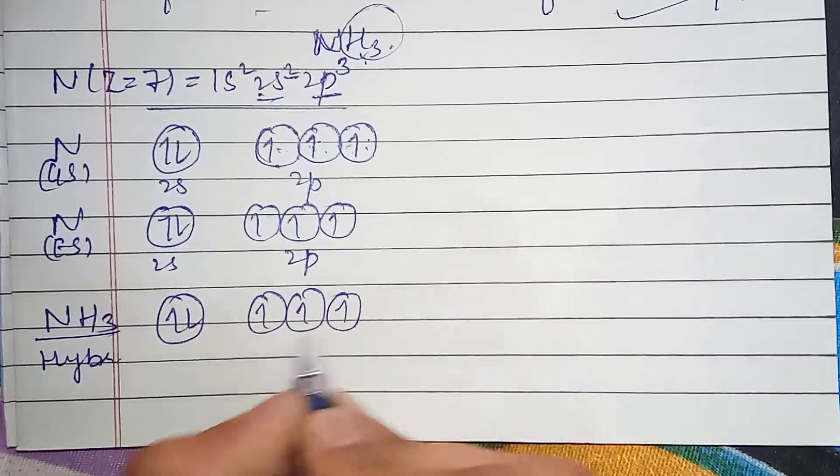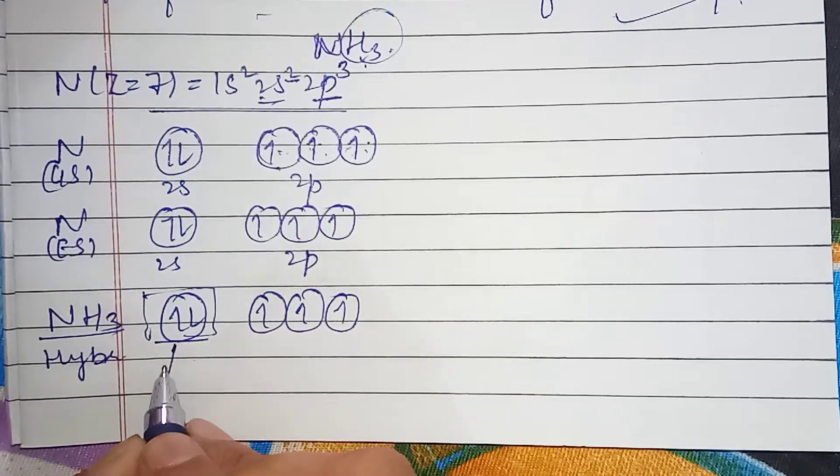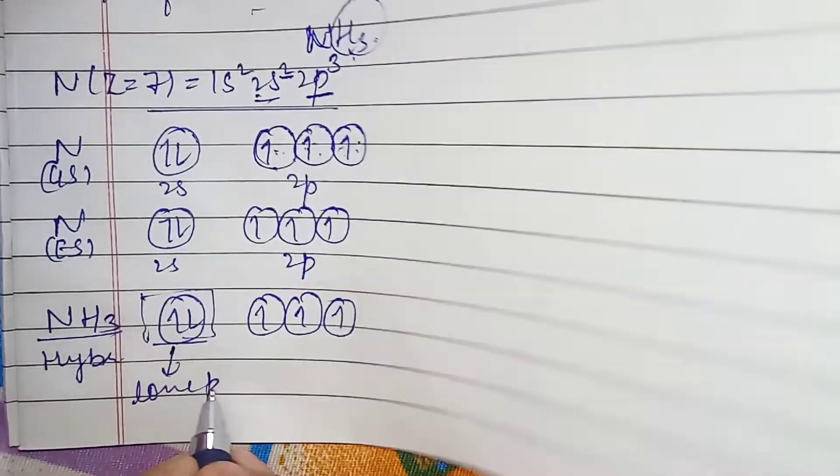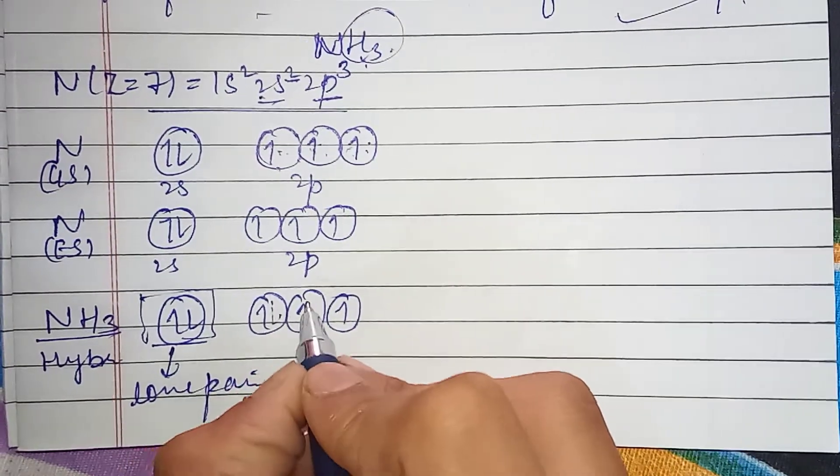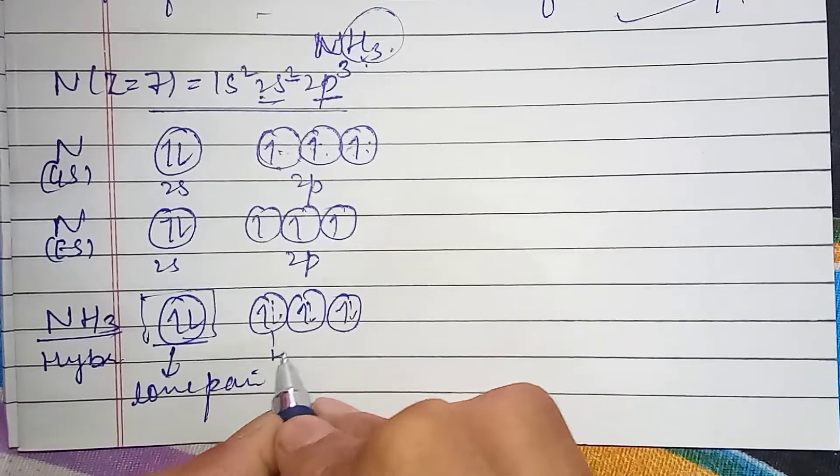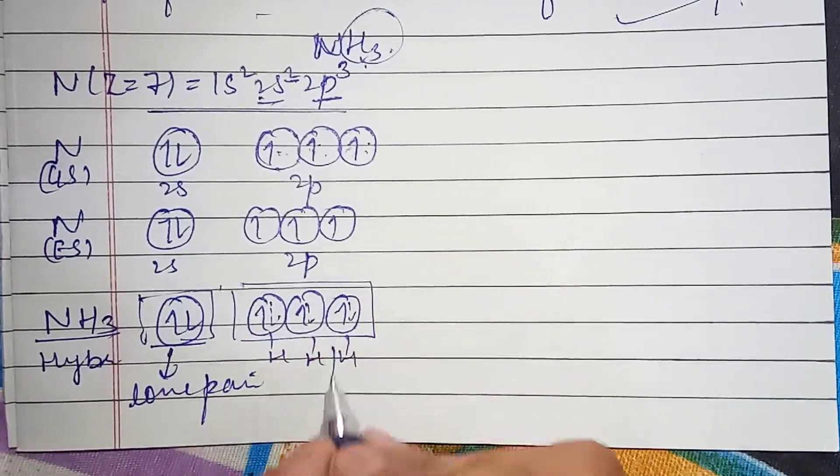As it is, which is completely filled, these are our lone pair electrons. These are not fully filled, which we have to fill in. So these are our bond pair electrons.